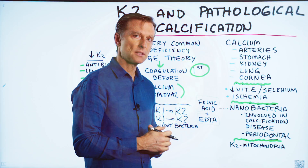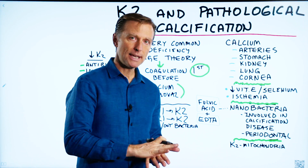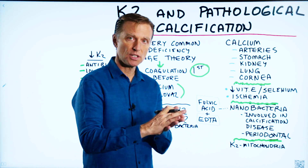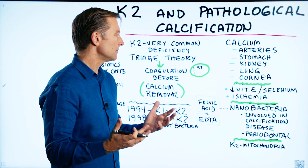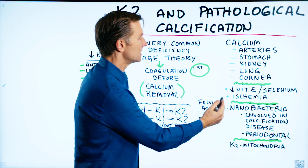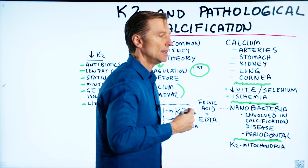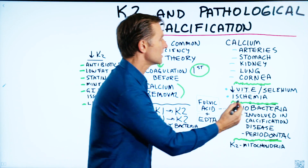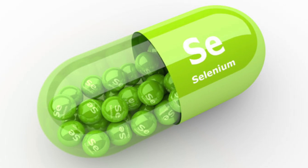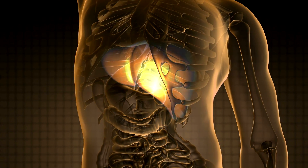This calcium could be developing as a need to act like a Band-Aid because there's oxidation in the vascular system or a certain part of the body. And if you don't have enough vitamin E to protect that oxidative lesion, or selenium, which is a very powerful antioxidant involved with glutathione, which is the main antioxidant of the liver,